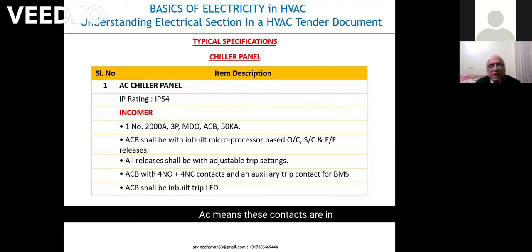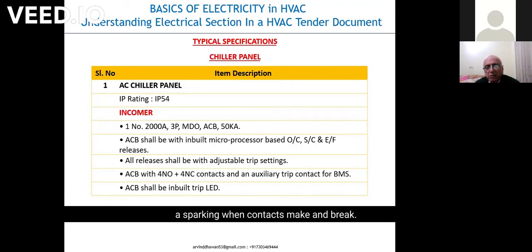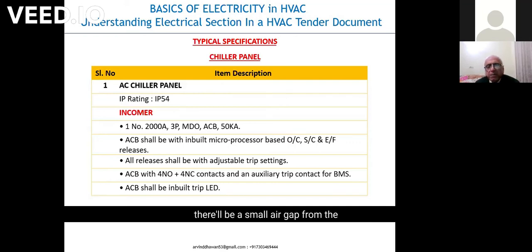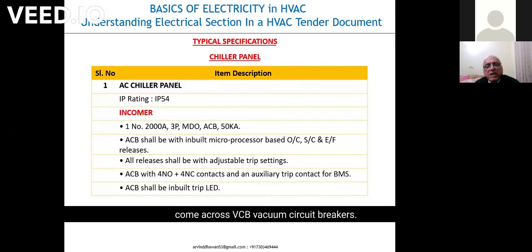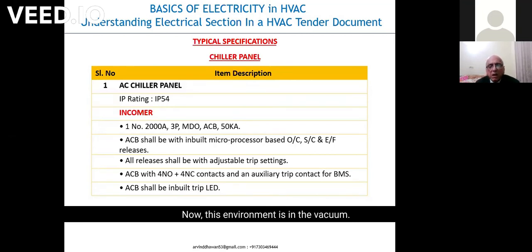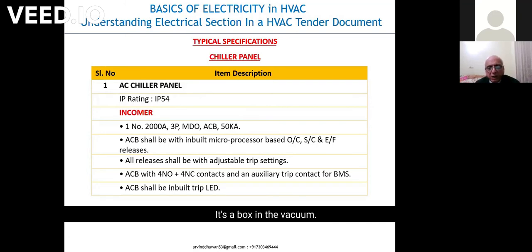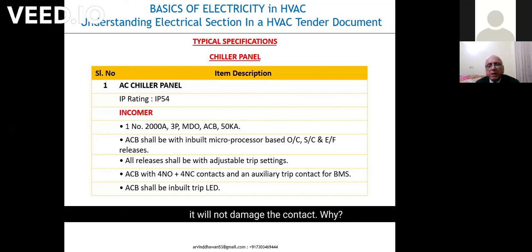ACB means these contacts are surrounded by an environment of air. If you have contacts in an environment of air, there will be sparking when contacts make and break. Normally when they break, there will be sparking because there will be a small air gap from the point of switch-off to total switch-off. To overcome that, you also come across VCB — vacuum circuit breakers. This environment is in a vacuum, so the sparking will not take place, and if it does, it will not damage the contact.